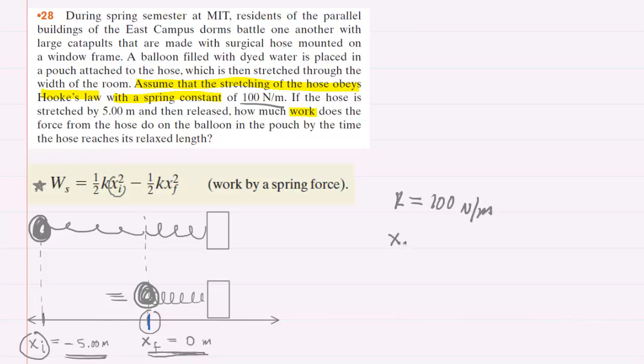So we will say x initial equals negative five meters, and then we release the balloon so that it returns to this reference point, this equilibrium position, which has an x coordinate of zero meters, so x final equals zero meters.